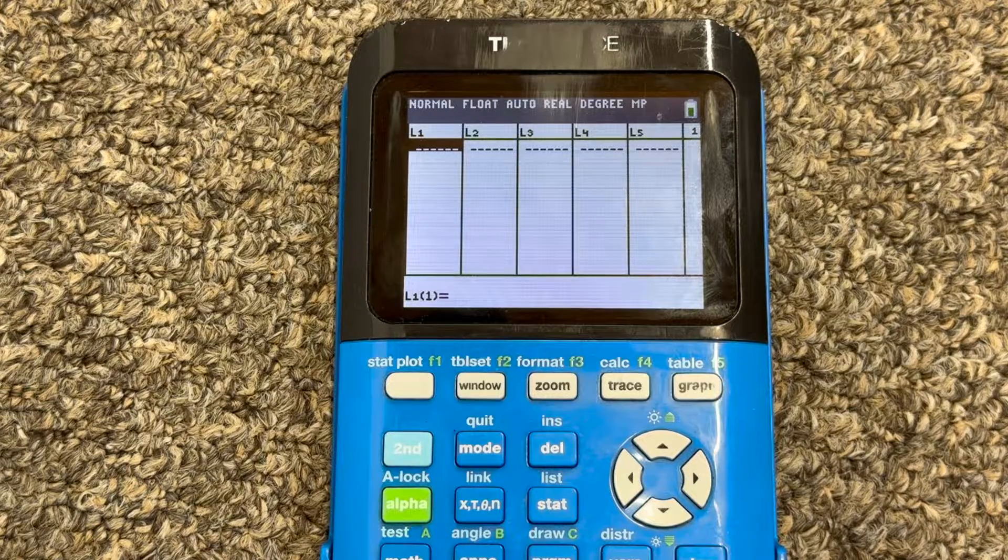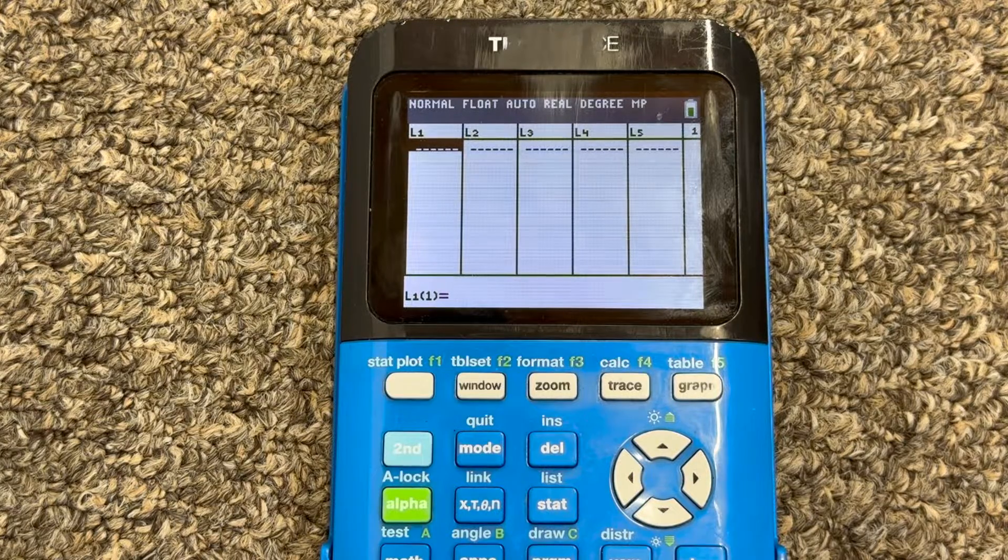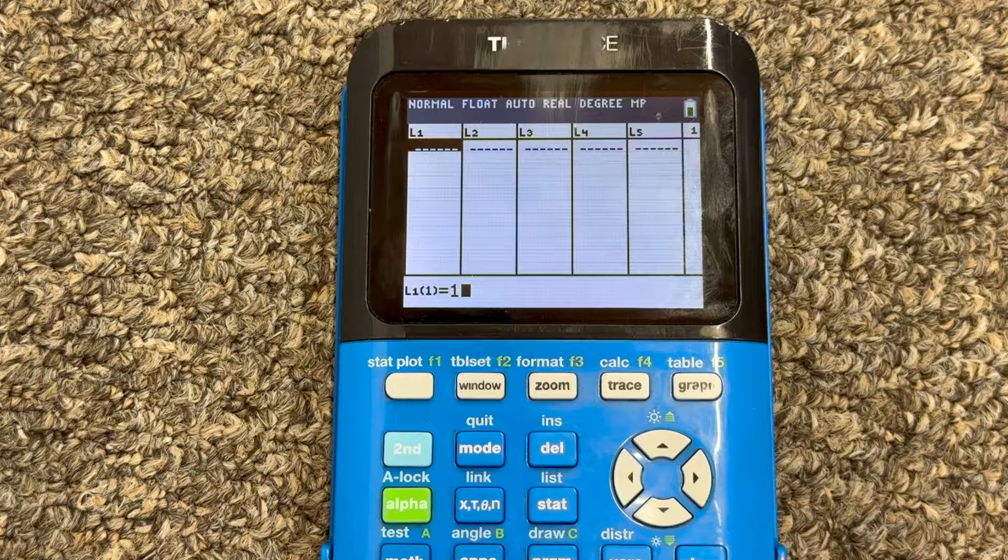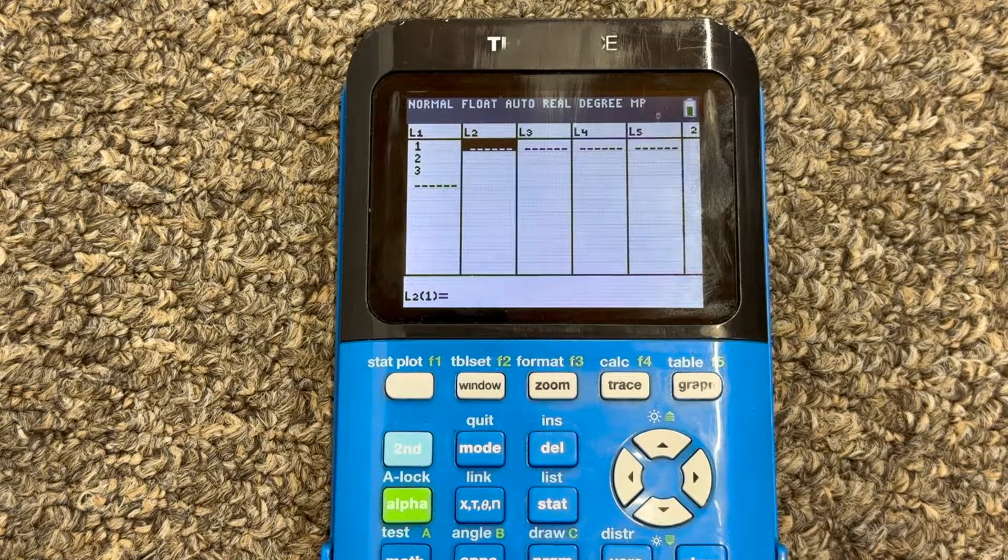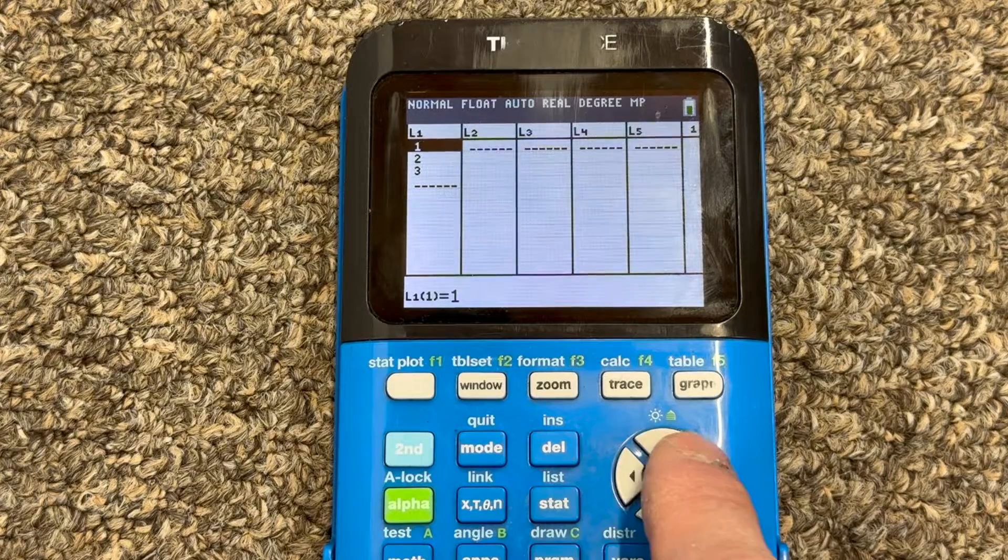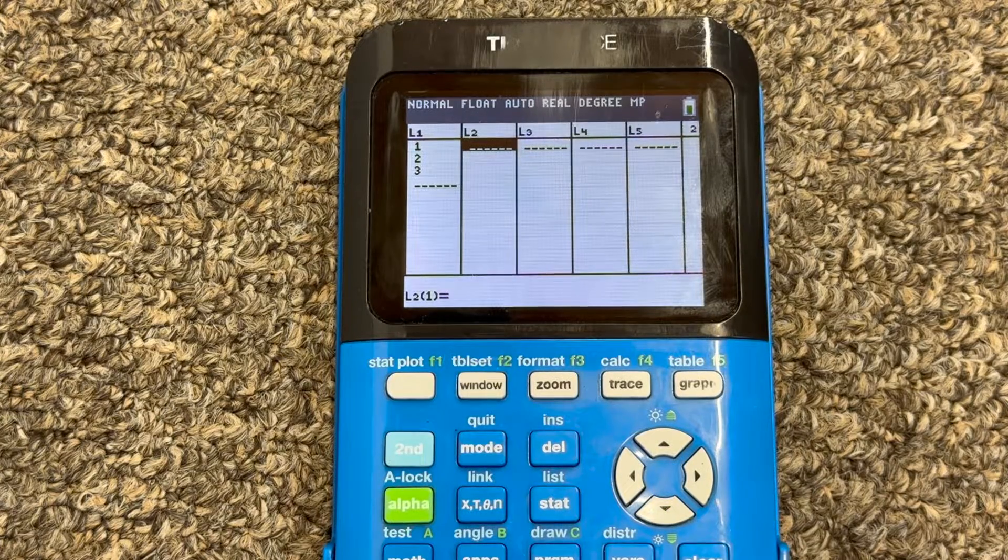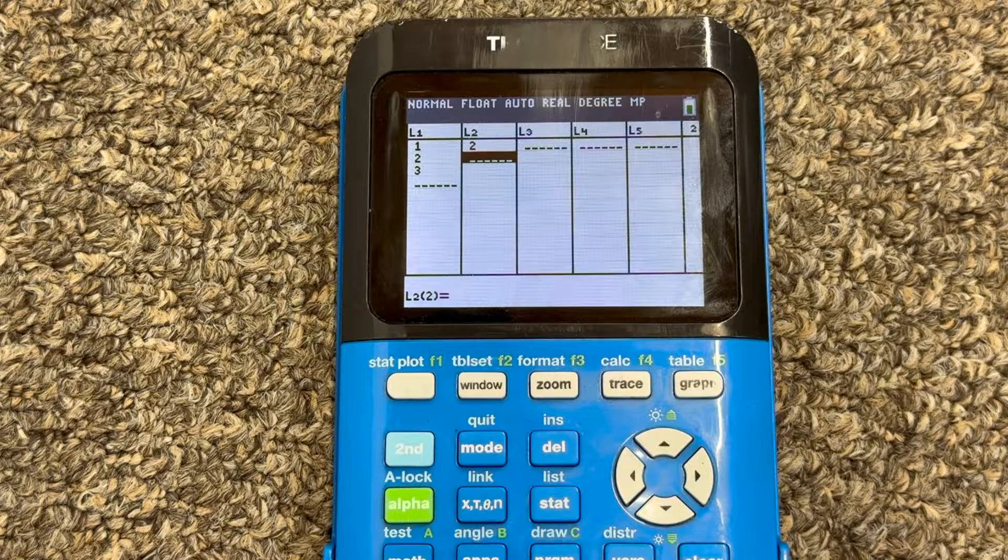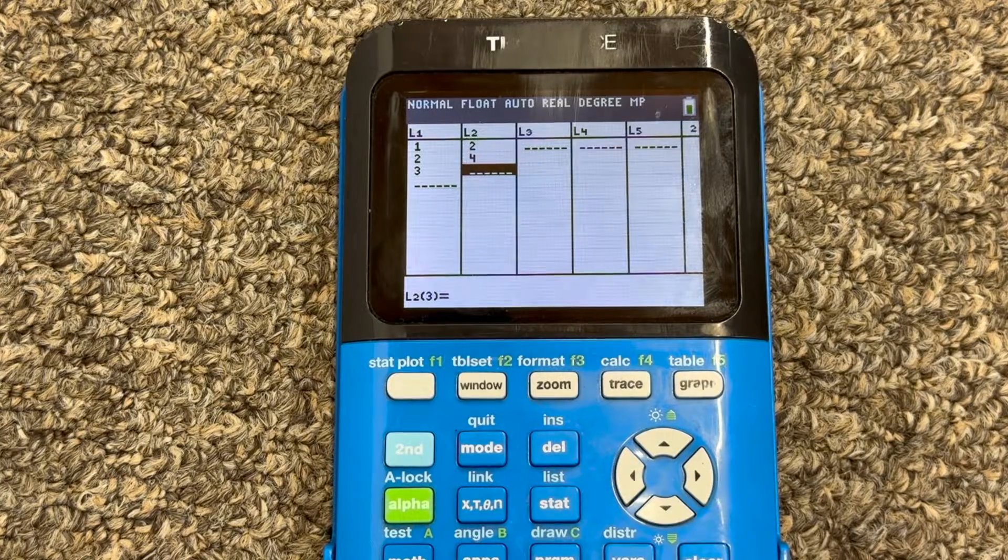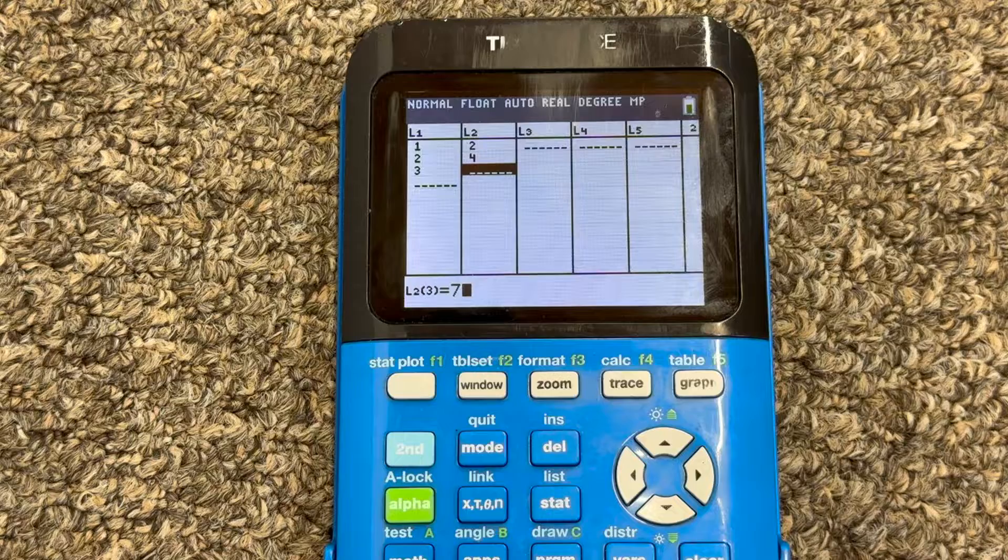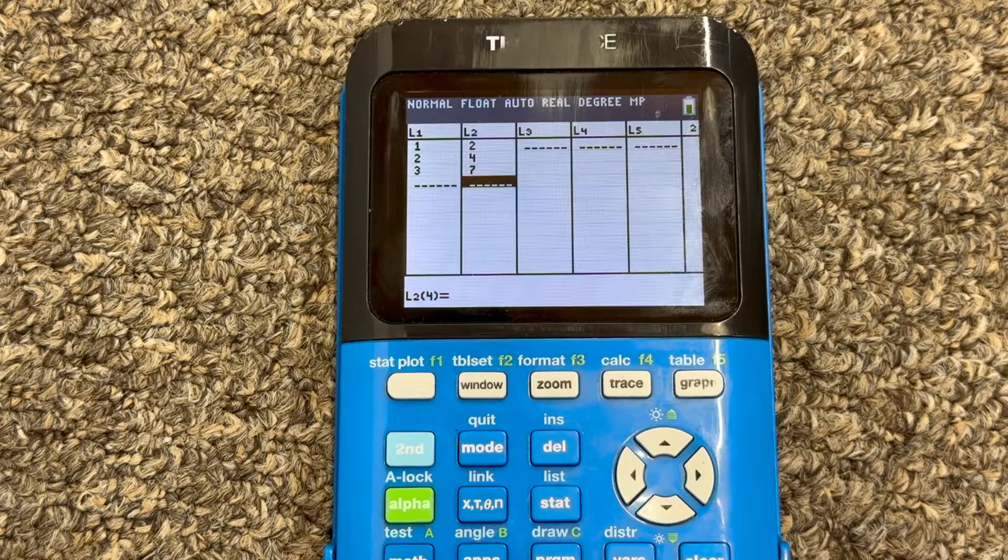For list one, you would put your x coordinates of your points. For example, I'm going to press maybe one and two and three. And then for list two, we're going to put our corresponding y coordinate. So if it's the point one comma two, that would match up with the one there. And then for the next point, two comma four, and the next point, three comma seven. You can put in as many points as you want.